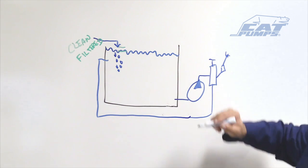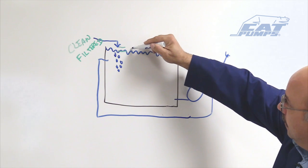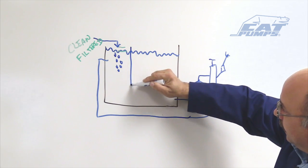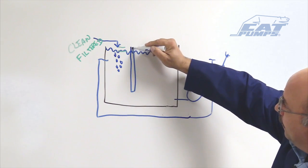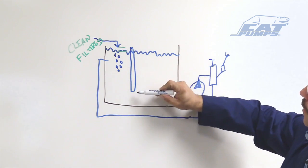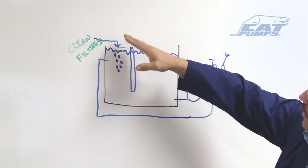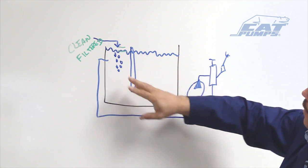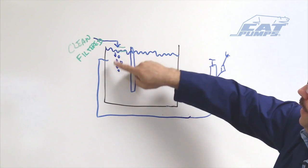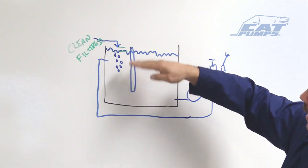So the first thing we can do is we can add a baffle right here on this side of the tank. And I'm going to put it above the water level but not quite to the bottom of the tank, because I want the water from this section to flow under that baffle. That way these air bubbles are trapped in this portion of the tank and they can be dissipated out.